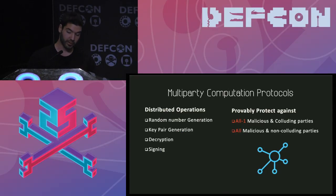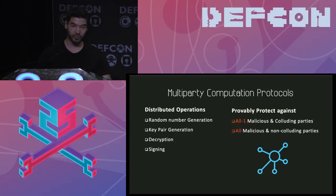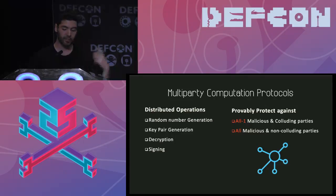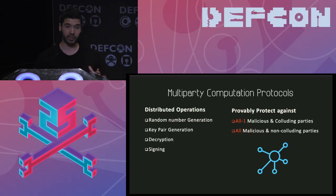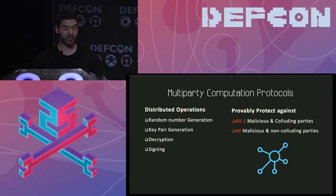For the protocols, we have multi-party computation protocols which allow distributed operations, meaning the key is not on a single point at any time. You can generate random numbers in a distributed manner, do key pair generation, decryption, and signing. These protocols allow you to be secure in cases where all but one of your components are malicious and cooperate with each other, or secure in cases where all components are malicious but they don't cooperate.